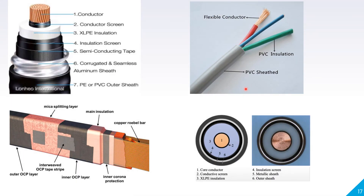In a cross-sectional view of the cable, the layers are: conductor, conductor screen, XLPE insulation layer, insulation screen, semi-conducting tape, seamless aluminum sheath, and PVC outer sheet. The insulating material ensures that leakage current does not come outside or come in contact with anyone.